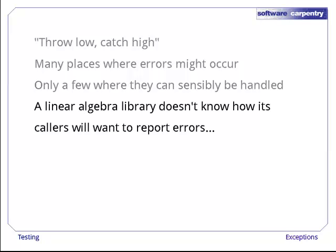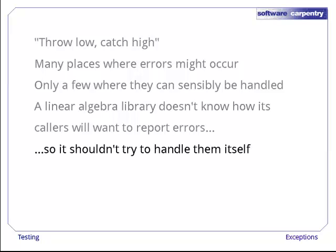For example, a linear algebra library doesn't know whether it's being called directly from the Python interpreter or whether it's being used as a component in a larger program. In the latter case, the library doesn't know if the program that's calling it is being run from the command line or from a GUI. The library therefore shouldn't try to handle or report errors itself because it has no way of knowing what the right way to do this is. Instead, it should just raise an exception and let its caller figure out how best to handle it.